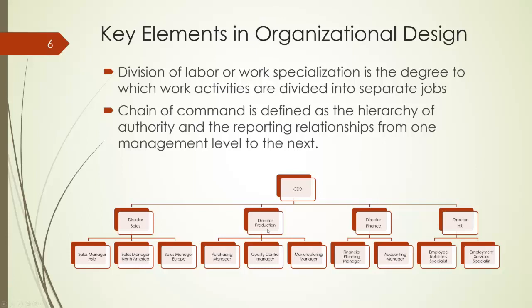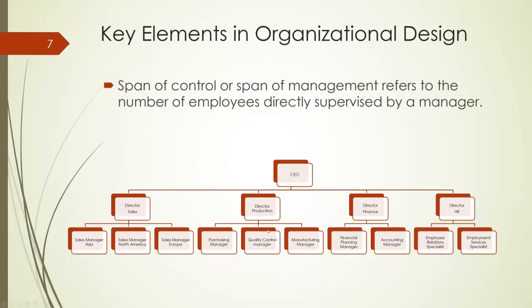In the figure, the accounting manager and financial planning manager report to the director of finance, who in turn reports to the CEO. Another key element of design is the span of control, or the span of management, which is the number of employees reporting to a supervisor. It determines how closely a supervisor can monitor subordinates. For example, the director of finance and director of human resources each supervise two employees, and therefore we can say that they have a wider span of control.